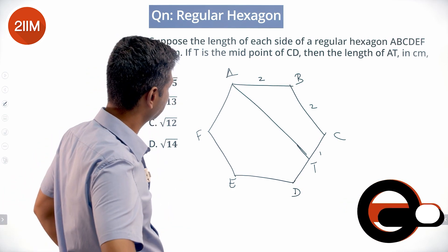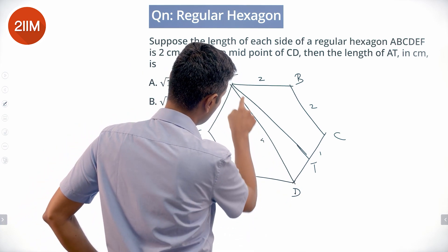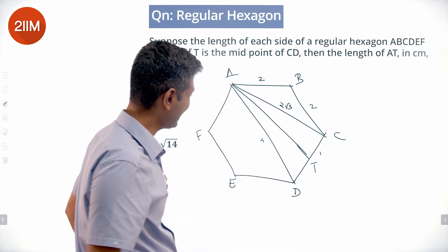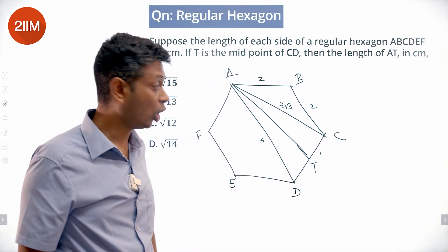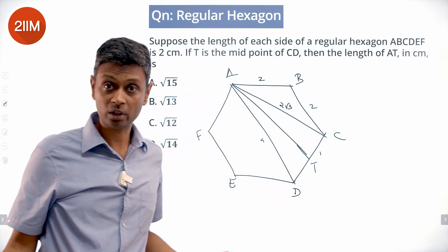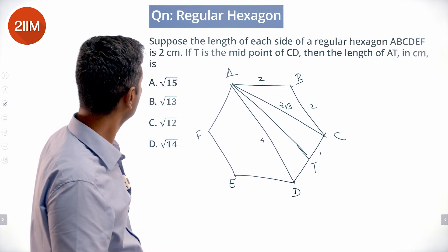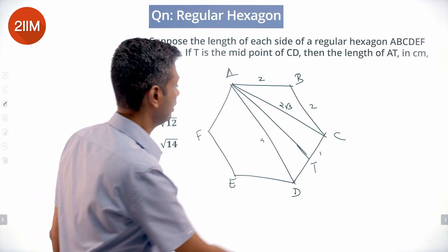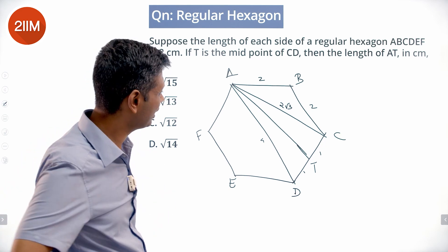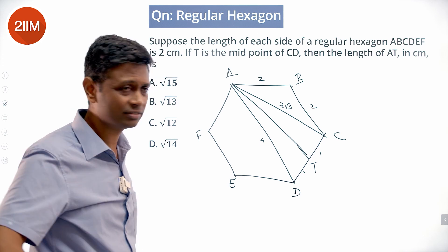How do we find AT? Remember, AT is not perpendicular to CD. We can't just plug in Pythagoras theorem and simplify. That doesn't work. We need to figure out some other mechanism of cracking this. It is still tough.